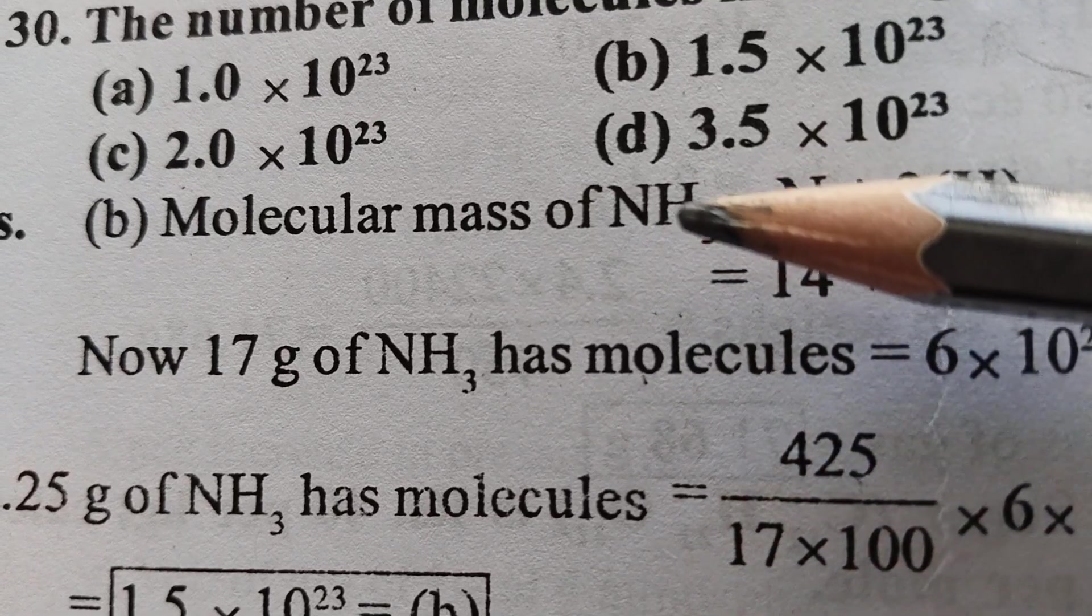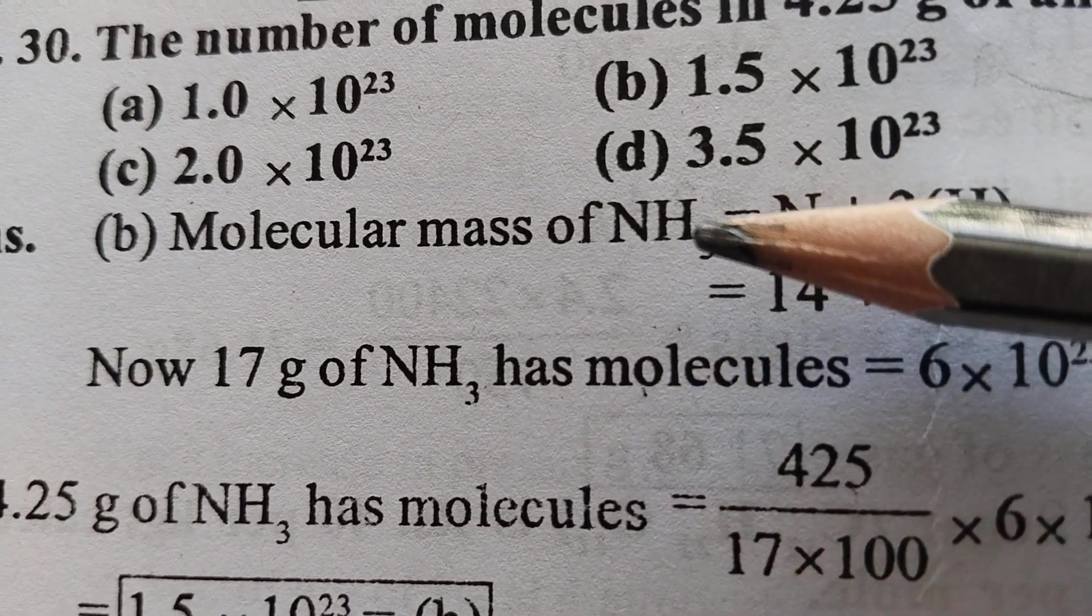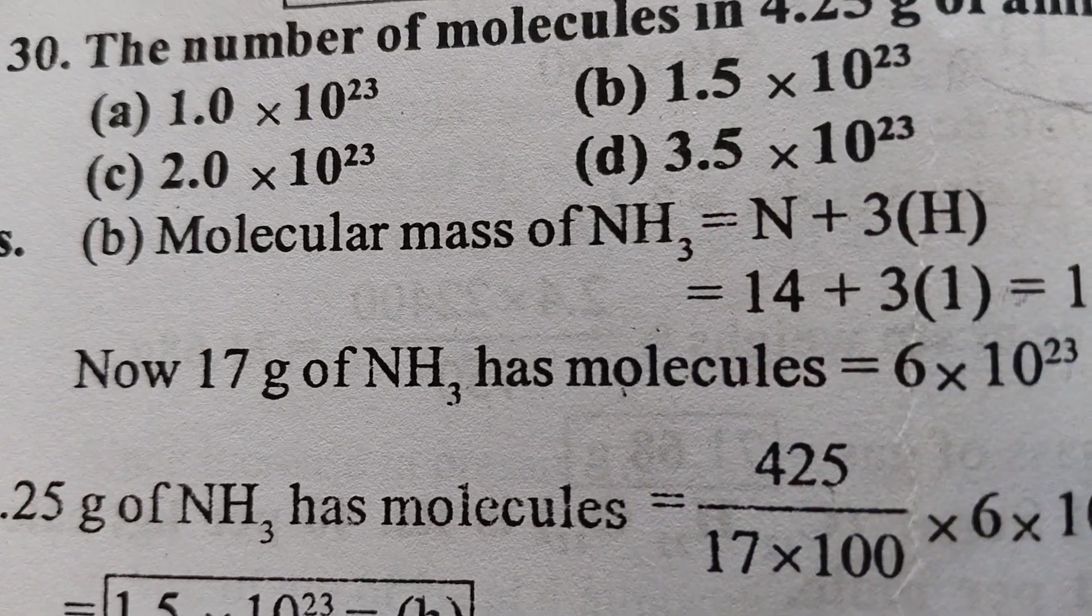Okay, nitrogen 14, hydrogen—each hydrogen is 1. Three hydrogens are there, 3 × 1 = 17.